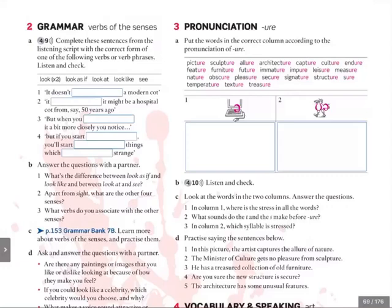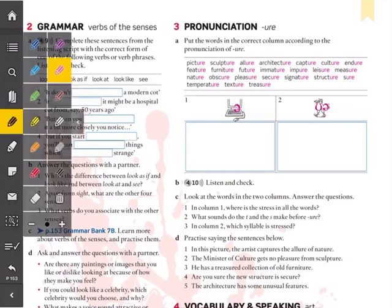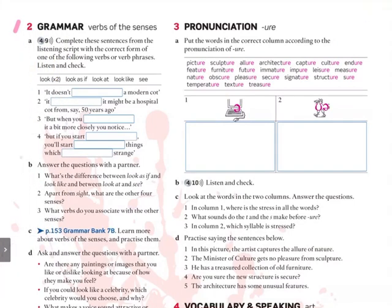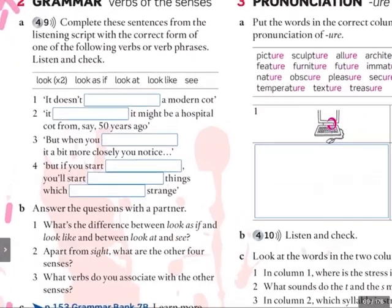Good evening and welcome to today's class. Today we're going to look at page 69. We're going to focus on exercise number 2, which is our grammar exercise. And we're going to look specifically at A, B and C, but we'll talk about letter D at the end. So, first of all, let's have a look at letter A.